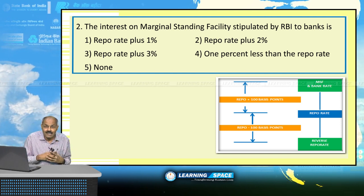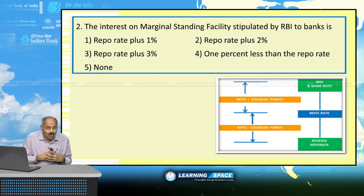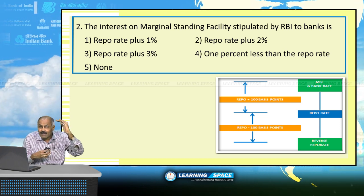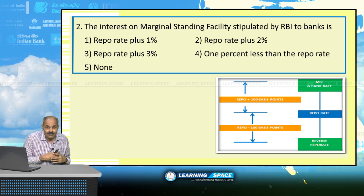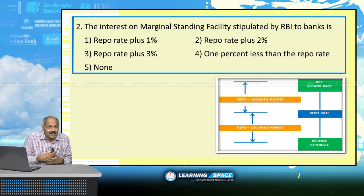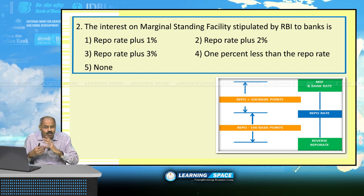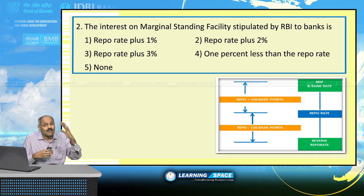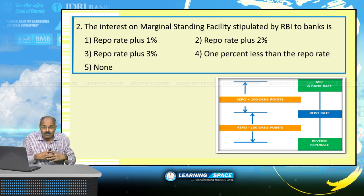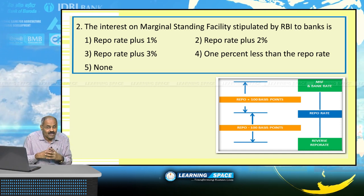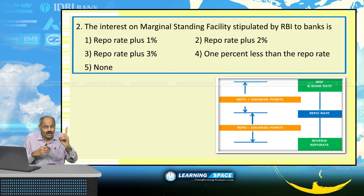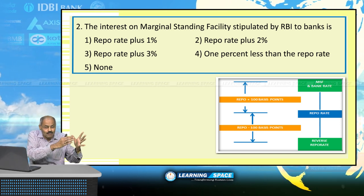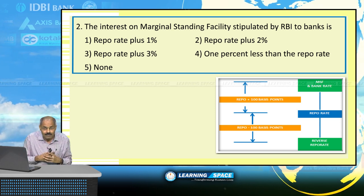If CRR is increased by 50 basis points, it means CRR is increased by 0.5%. If SLR is reduced by 25 basis points, it means SLR is reduced by 0.25%. So please don't forget: 1 basis point is 0.01% and 100 basis points is 1%.